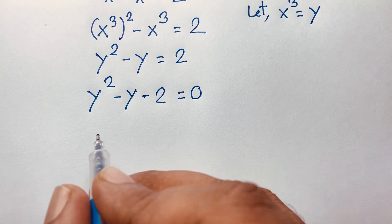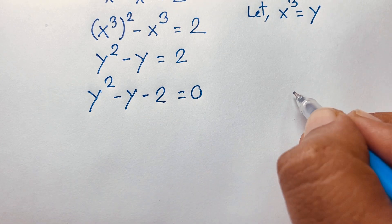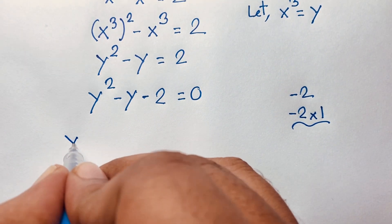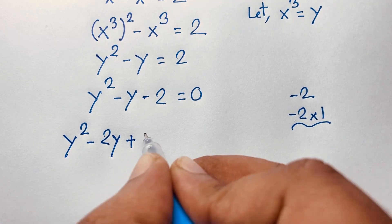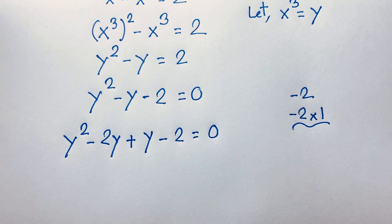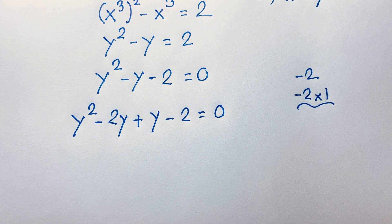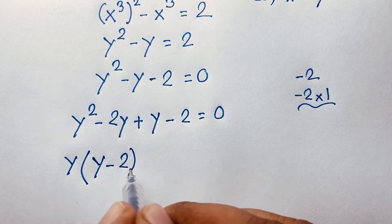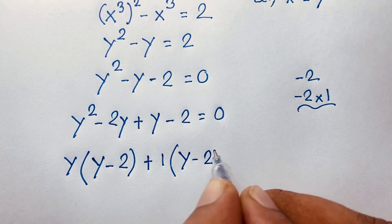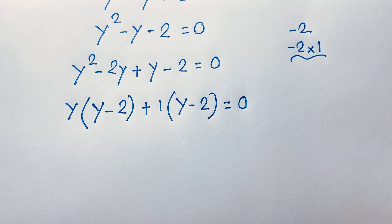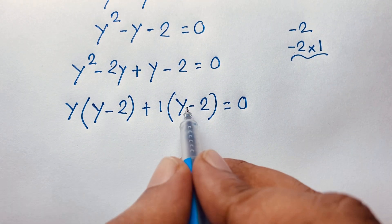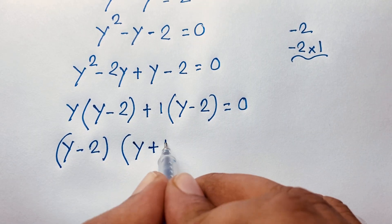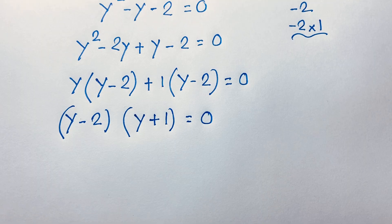So we find a nice quadratic equation: y squared minus y minus 2 is equal to 0. Now, if I do middle-term factoring, 2 times 1 is 2, so negative 2 is minus 2 times 1. This expression becomes y squared minus 2y plus y minus 2 is equal to 0. Here, y is common, so y squared divided by y is y, and 2y divided by y is 2. And here, positive 1 is common, so it will be y minus 2 times y plus 1 is equal to 0.